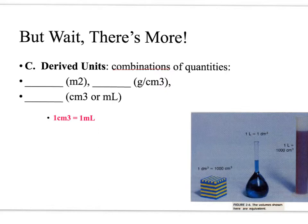So let me talk about some derived units. Derived units are combinations of quantities. They're combining some of the SI accepted units to make other units. The first one would be meters squared, which would be how we would write area, because it would be length times length.